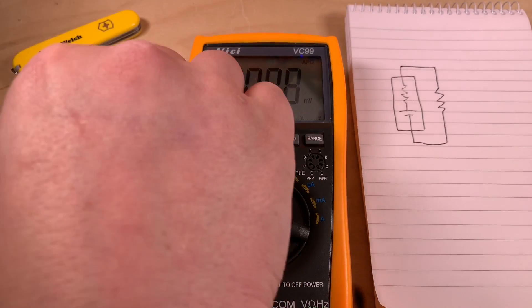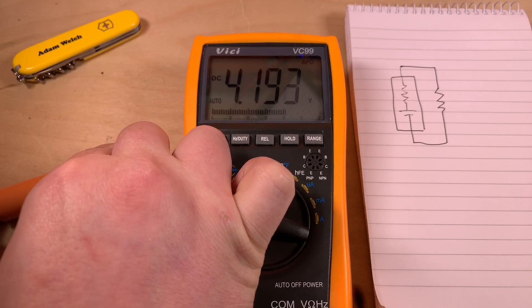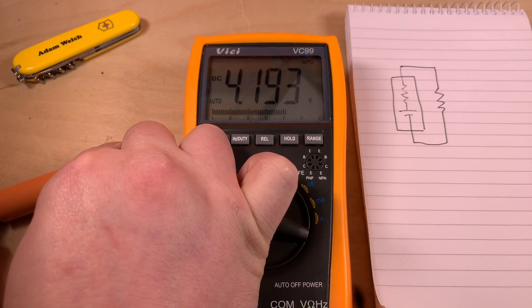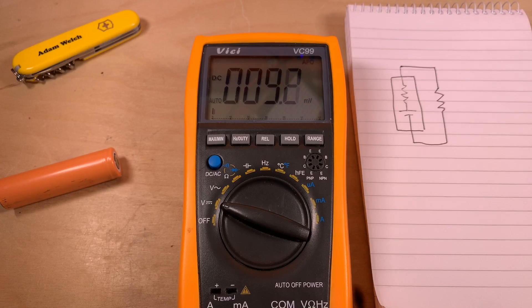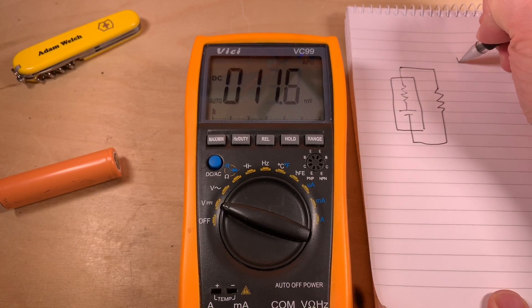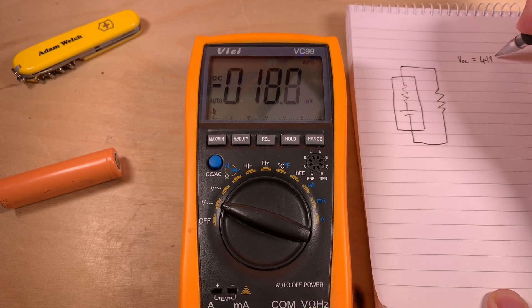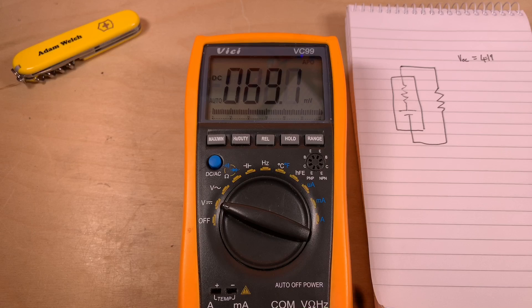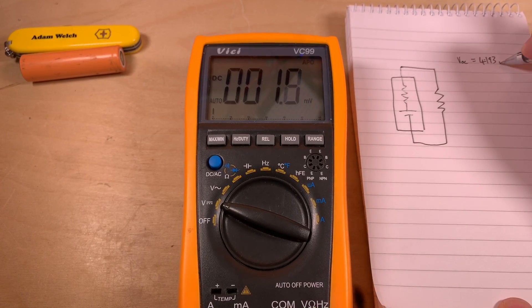So firstly, let's take the open circuit voltage of this cell here, and this cell is all but fully charged - 4.193 volts. Let's just note that down. So the voltage open circuit equals 4.193 volts.